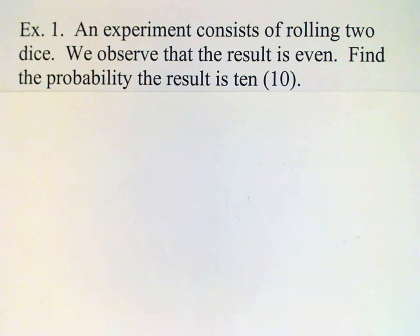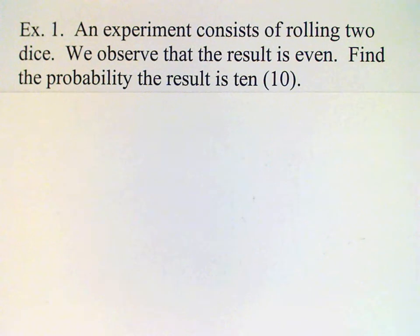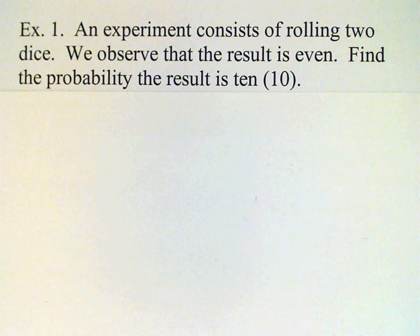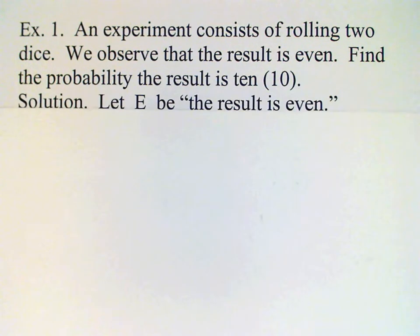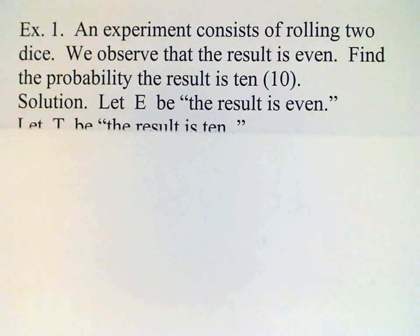This is another example of conditional probability. The probability we're interested in is that the outcome is a ten — the total on the two dice — and the conditioning event is the fact that we know the result is even. We'll let E be 'result is even' and T be 'the result is ten.'